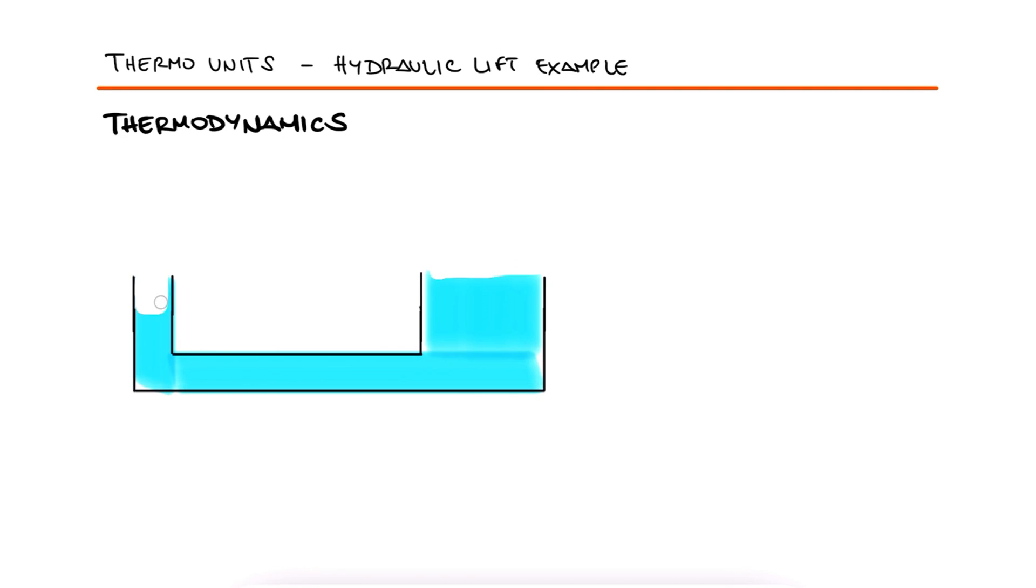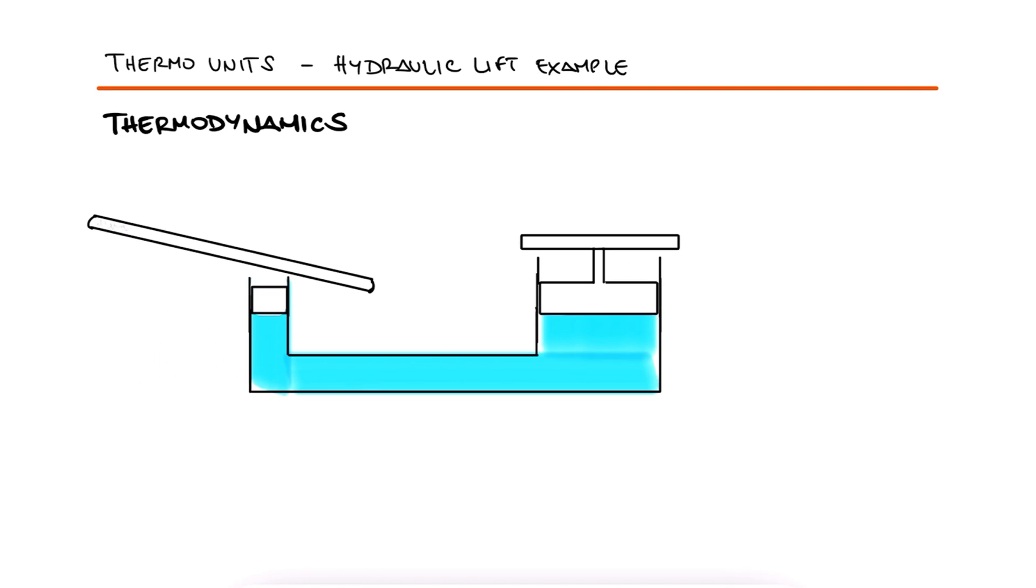A hydraulic lift is used to lift heavy weights by pushing down on a small piston with a diameter of 13 cm. The diameter of the large piston on which the mass is to be placed is 1 meter.